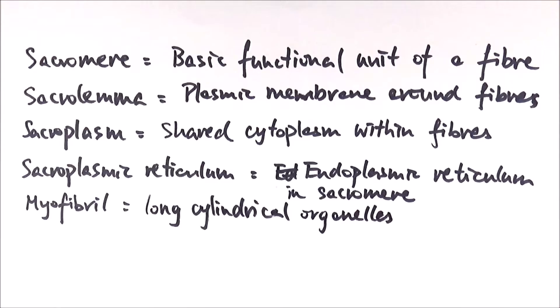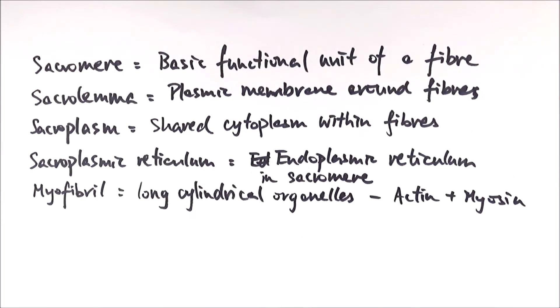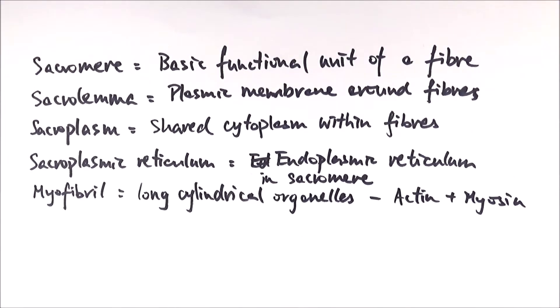The sarcoplasmic reticulum is very important because it gets depolarized when it receives a signal and releases calcium ions, which are crucial to muscle contraction. Then we have the myofibril — long cylindrical organelles that bring about muscle contraction. They are made of actin and myosin, the two crucial proteins we will look at in more detail.